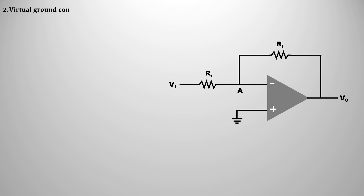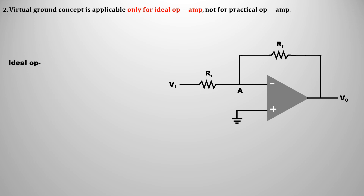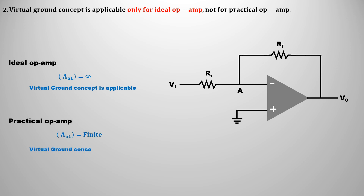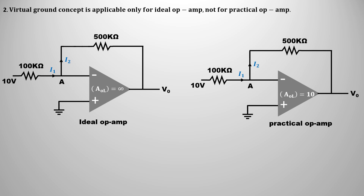The second limitation is that the virtual ground concept is applicable only for an ideal operational amplifier. If the operational amplifier is practical, then the virtual ground concept will not be applicable, because the open-loop gain of an ideal operational amplifier is infinite, while for a practical operational amplifier, the open-loop gain is finite. To understand how to solve a problem without using the virtual ground concept, consider an example with two operational amplifiers — one ideal and the other practical with an open-loop gain of 10.